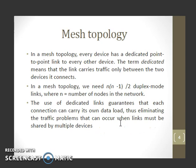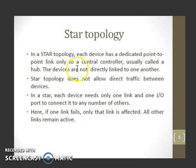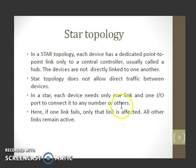In star topology, each device has a dedicated point-to-point link only to a central controller, usually called a hub. The devices are not directly linked to one another, so star topology does not allow direct traffic between devices. In a star, each device needs only one link and one input/output port to connect it to any number of others. If one link fails, only that link is affected; all the others remain active.